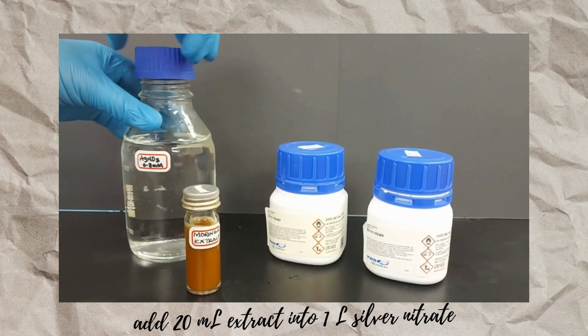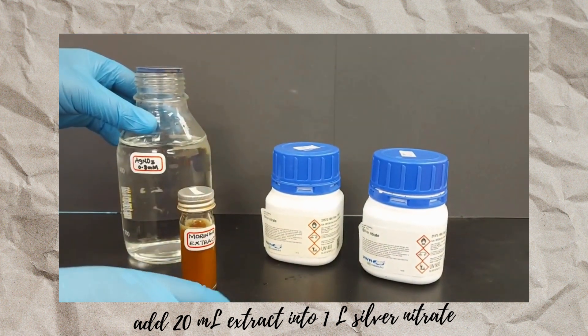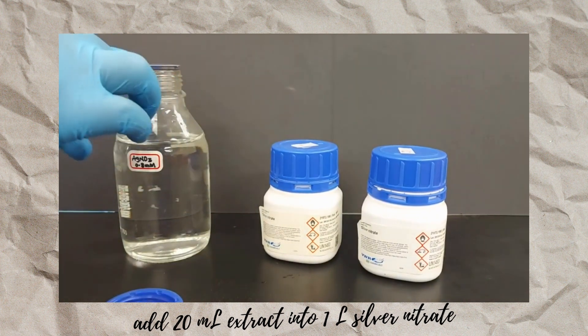Now slowly add 20 milliliter of the 20% plant extract into one liter of the prepared silver nitrate solution.